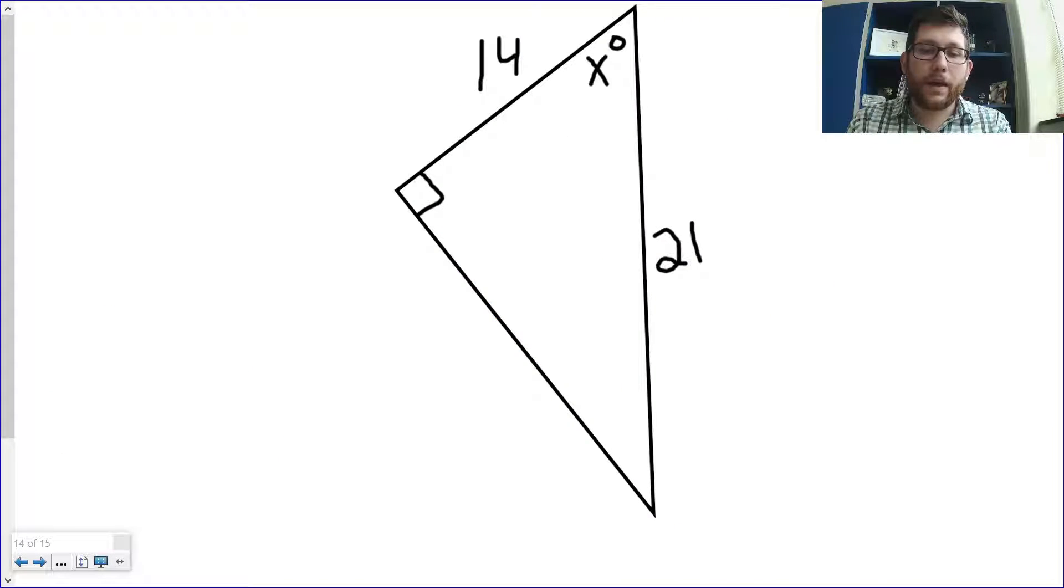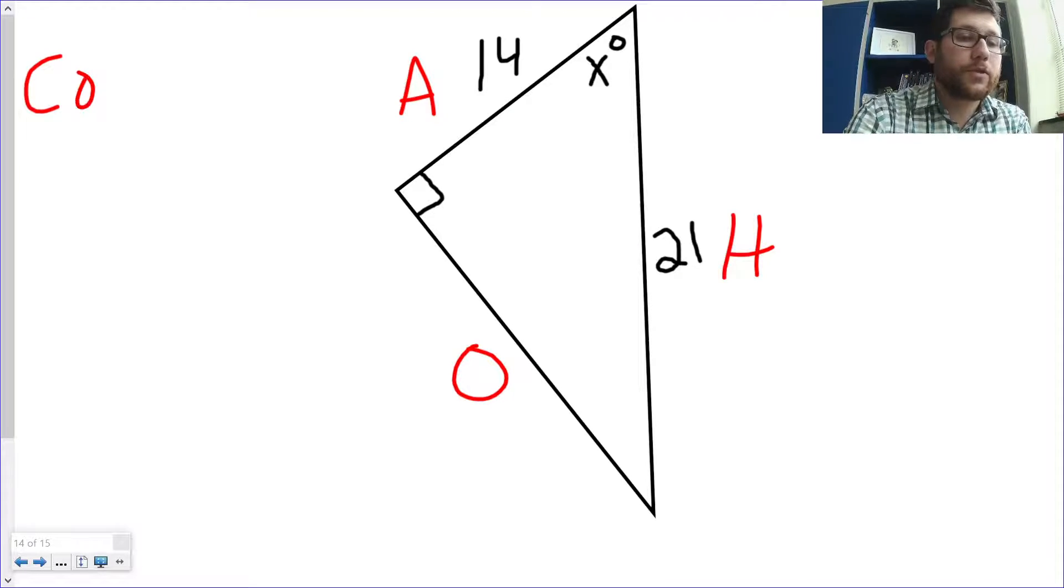All right. Last problem. Once again, we're going to do O, H, and A. So, that's my O side. And that's my H side. And, again, O is opposite the angle. That's my A. I've got A and H. That's another cosine. So, I'm going to set this up. Cosine of my angle is equal to 14 over 21.